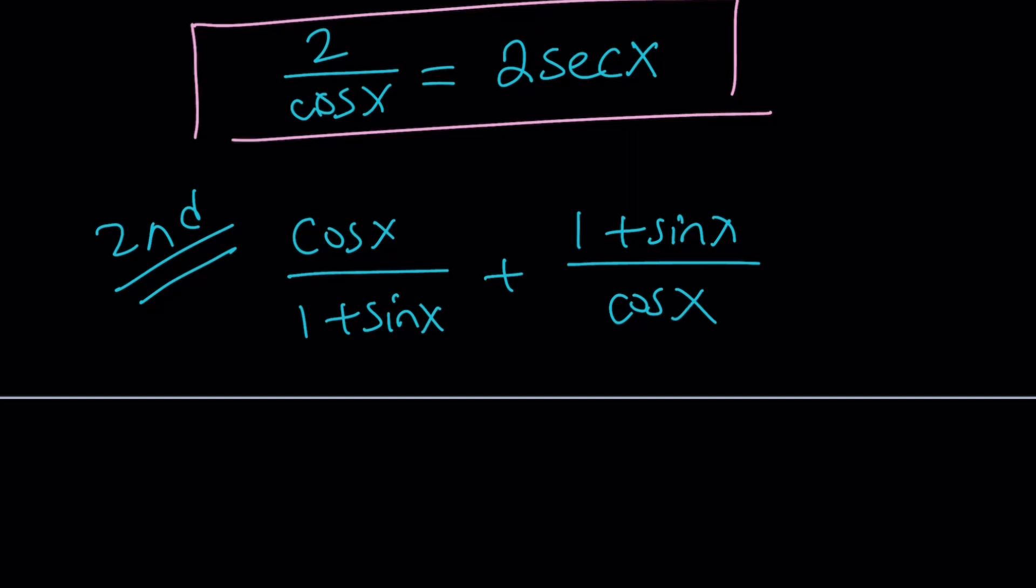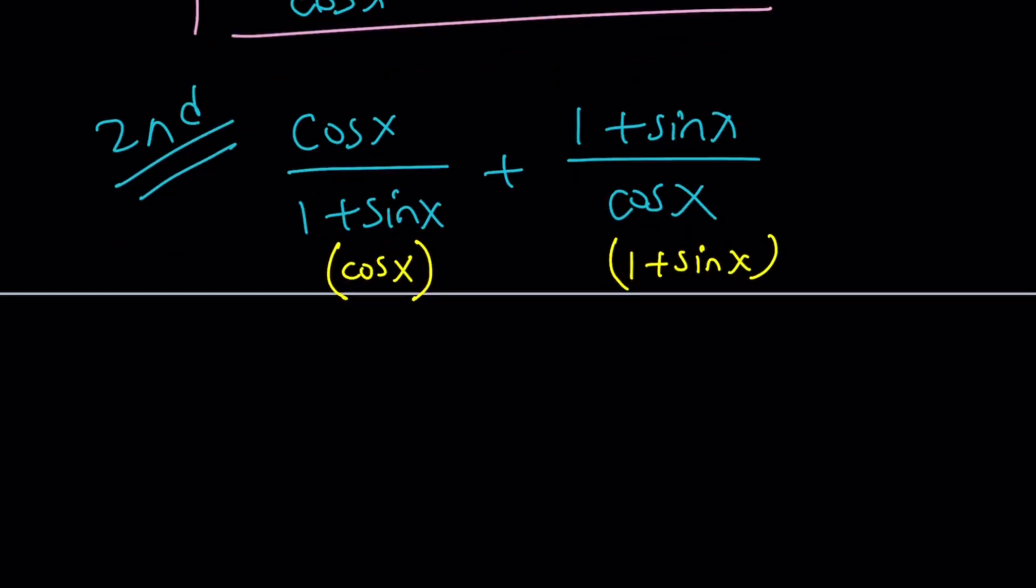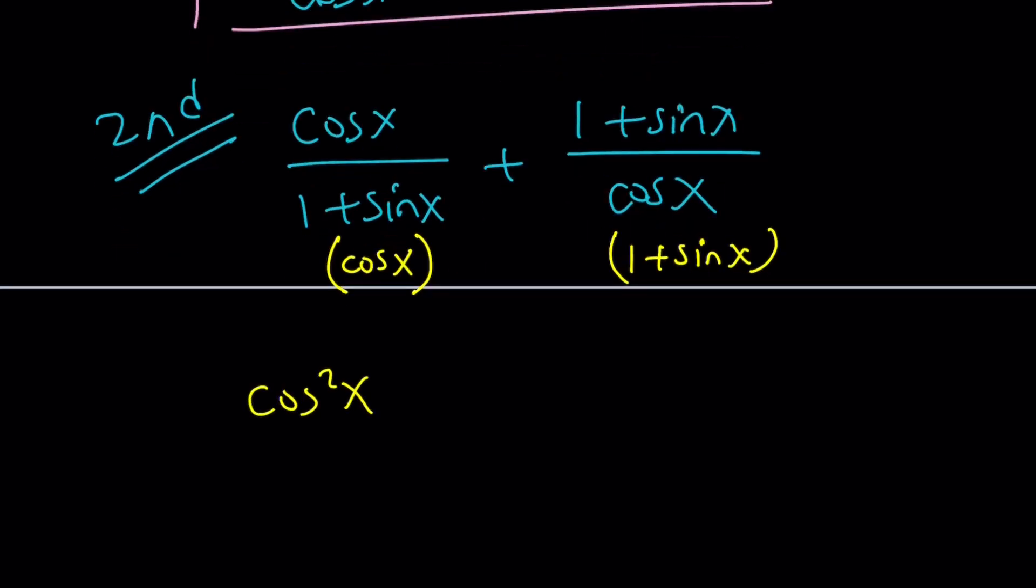Okay, let's make a common denominator. So I'm going to multiply this by cosine x. I'm going to put that in parentheses, top and bottom. And I'm going to multiply this by 1 plus sine x. And that's going to produce squares because cosine multiplied by cosine is cosine squared. And I can add them now because we have a common denominator.